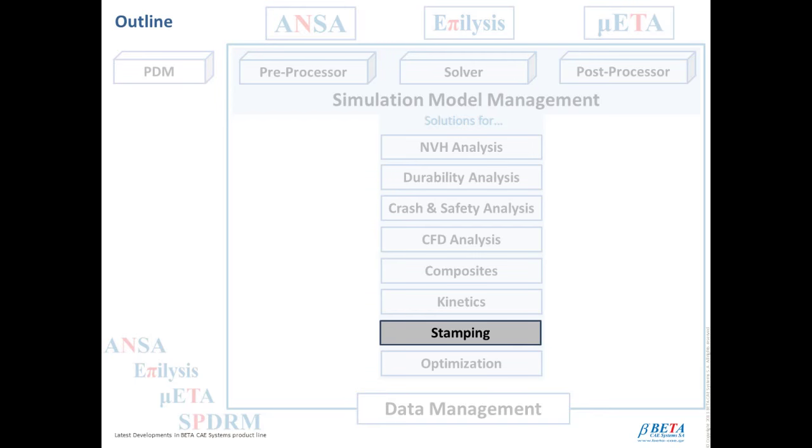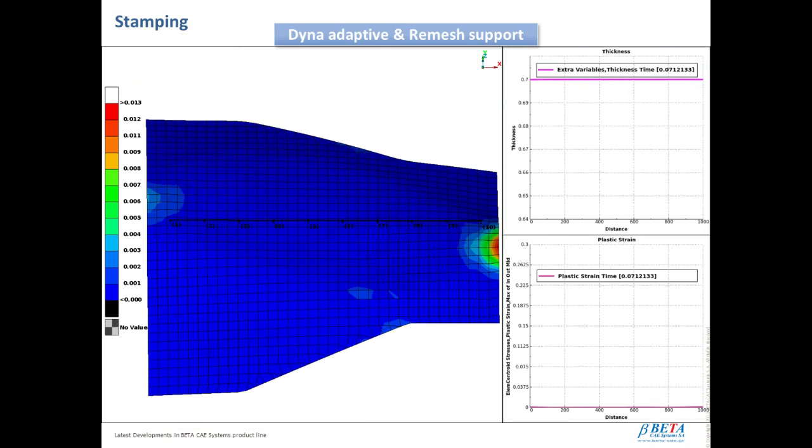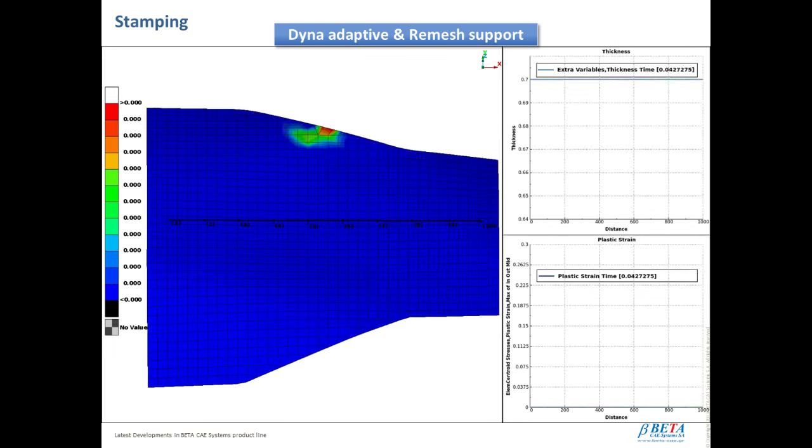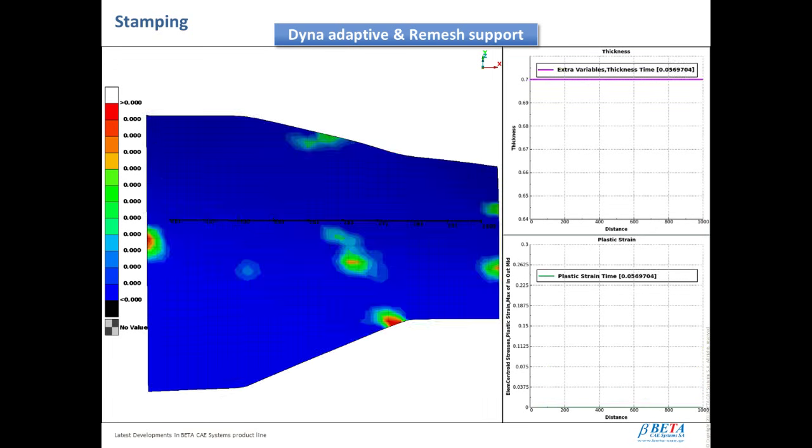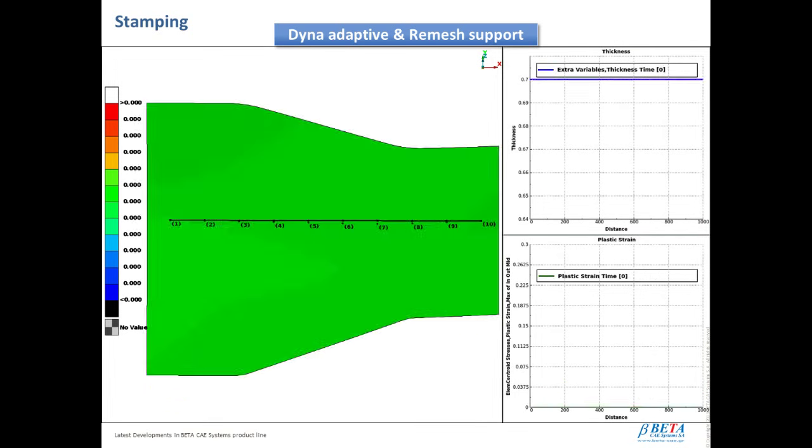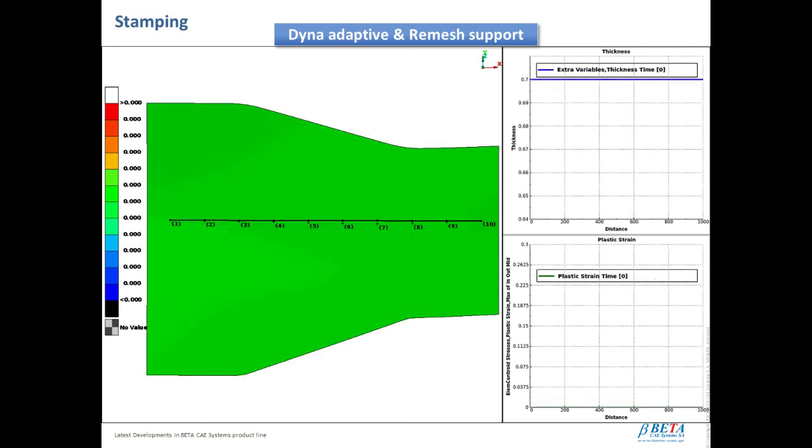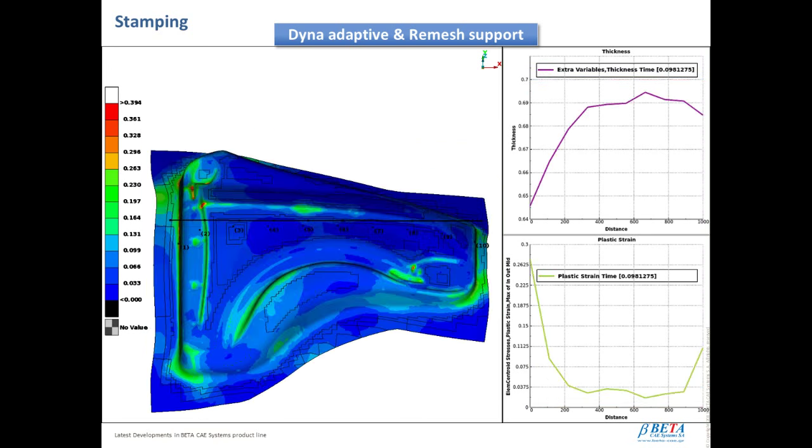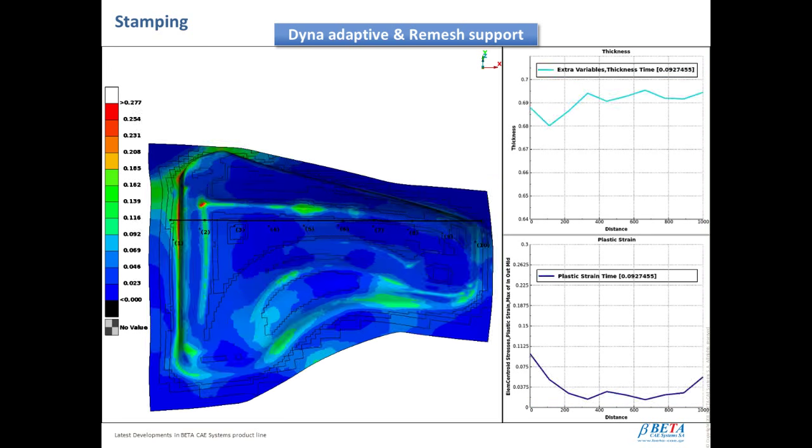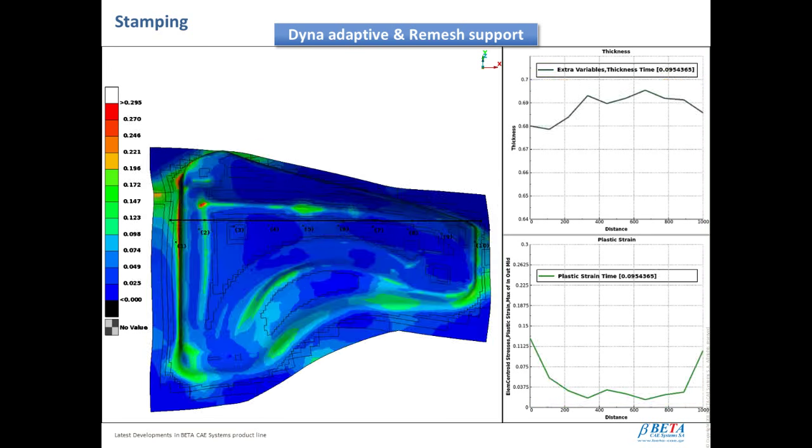Version 16 comes with new solutions in the stamping area. So, towards this direction, we have in the META post-processor, the Dyna adaptive and remeshing support, with tracking of mesh differences as displayed on screen, and other features, such as identification of planes and ISO functions, annotations, log manager, trajectories, parametric points, and many more.